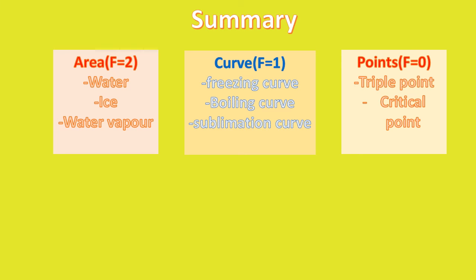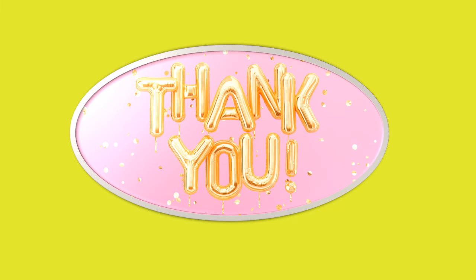To summarize: the areas (water, ice, water vapor) have degrees of freedom = 2 (bivariant). The curves (freezing curve, boiling curve, sublimation curve) have degrees of freedom = 1 (monovariant). The points — the triple point where all three phases are in equilibrium, and the critical point above which water exists only in the vapor phase — have F = 0 (invariant). Thank you students. I hope you have understood the concept very well. Let us meet on yet another concept. Thank you.